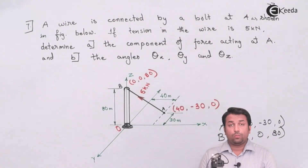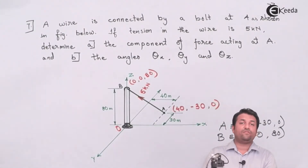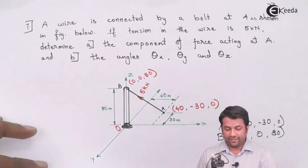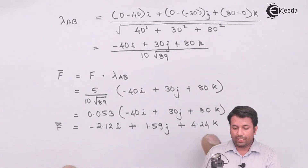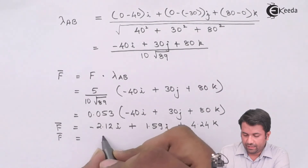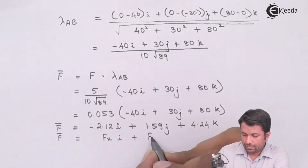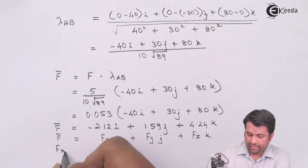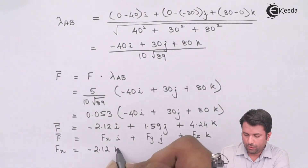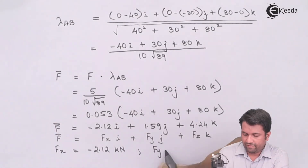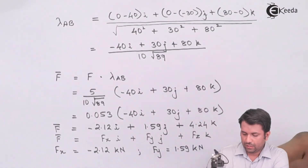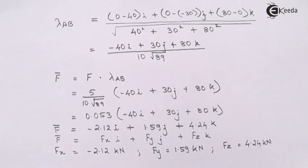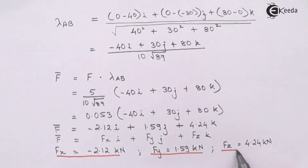The question asks to find the components of the force acting at A — meaning the components along all coordinate axes: X, Y, and Z. So Fx, Fy, and Fz are required, and these are the values from the force vector F = Fxi + Fyj + Fzk. So Fx is -2.12 kilonewtons, Fy is 1.59 kilonewtons, and Fz is 4.24 kilonewtons. The first part of the question is done.